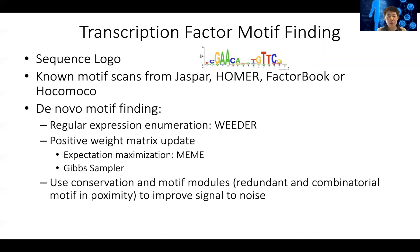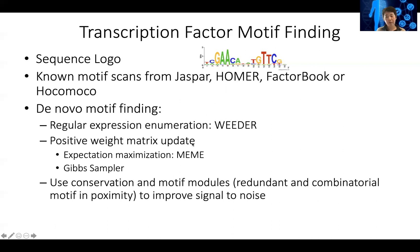For de novo motif finding, depending on the motif representation, for regular expression you can use methods such as Weeder, which uses a kind of k-mer enrichment and also suffix tree to identify the motif enrichment or occurrence. For a position weight matrix update, we introduced either expectation maximization and a Gibbs sampler.